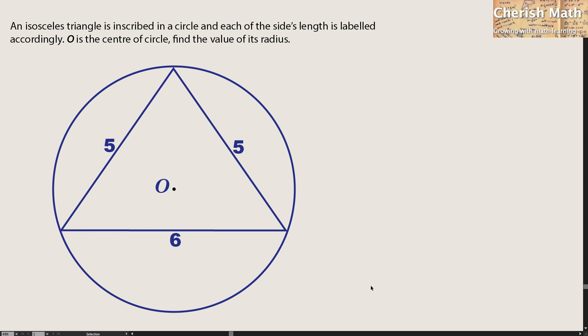Say hi from Challenge Math. This is the question for today. An isosceles triangle is inscribed in a circle, and each of the side's length is labeled accordingly. O is the center of the circle. Find the value of its radius.